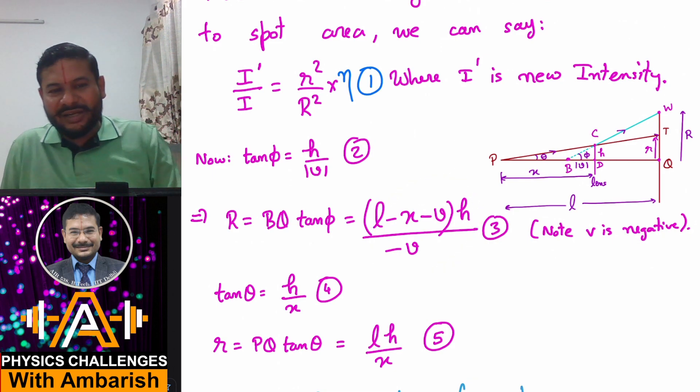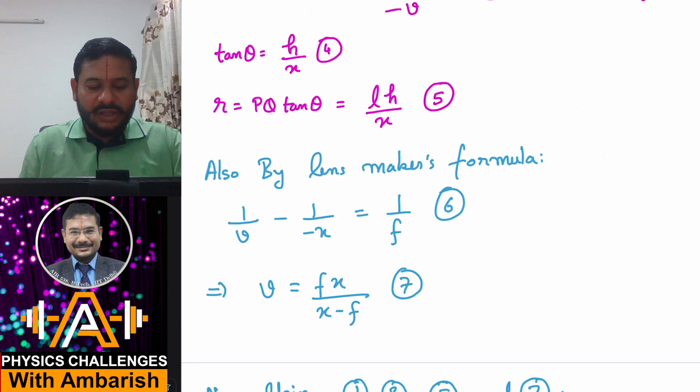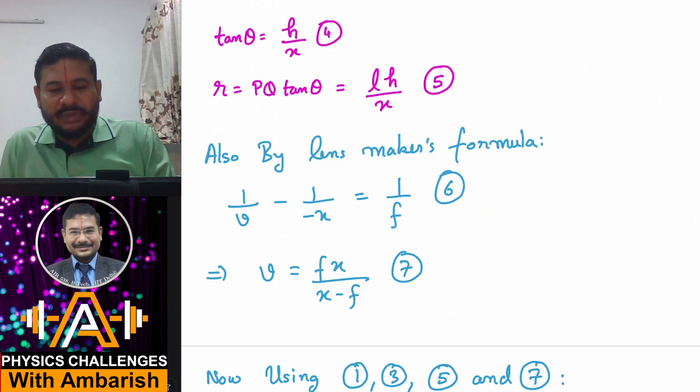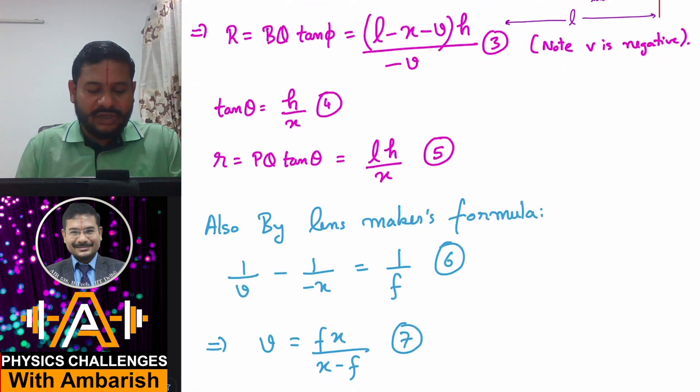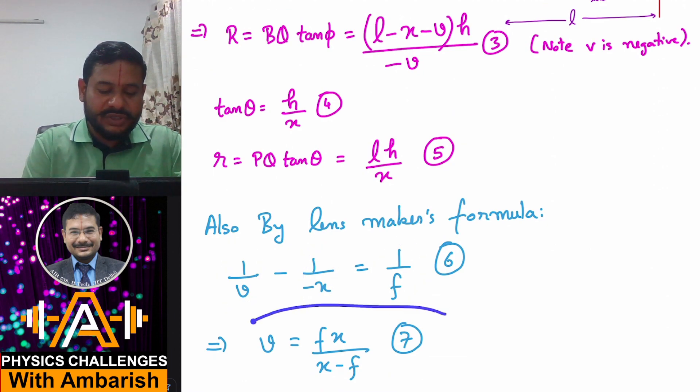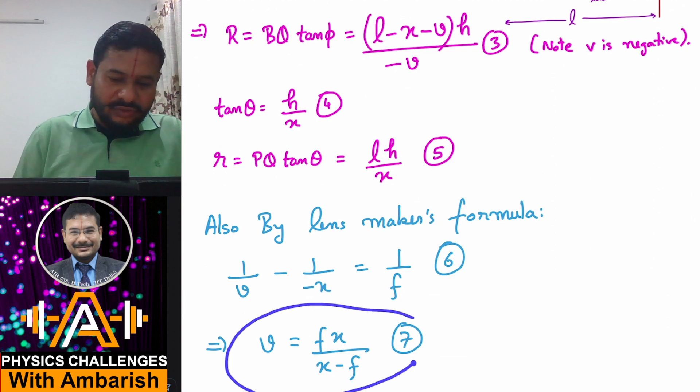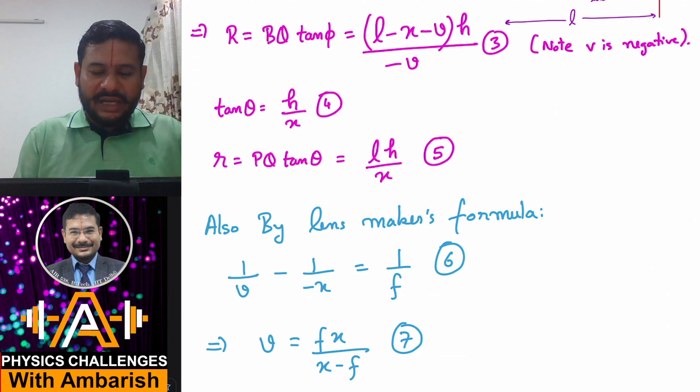I can use lens maker formula. I know that 1 by V minus 1 by U is 1 by F. In our case, the source is here and the lens is here, so U is minus X. 1 by V minus 1 by minus X equals 1 by F, and if you solve this equation you get V equals FX upon X minus F. So you get the value of V, put it here, and then divide. You can see H will cancel out when you do the ratio of squares. H² appears in both numerator and denominator. H² will cancel off. We had assumed some random small radius h anyway.